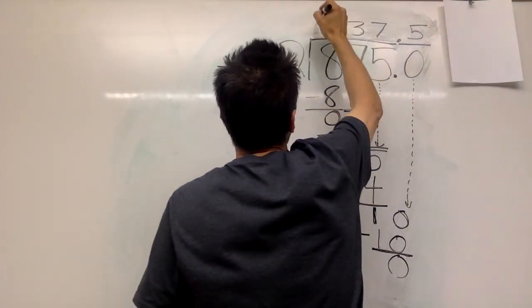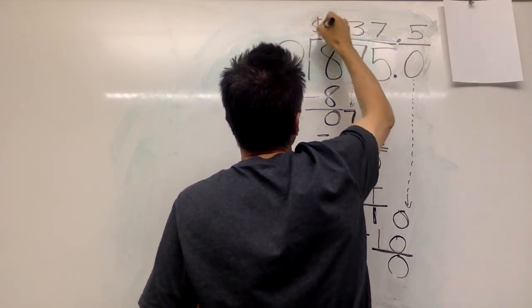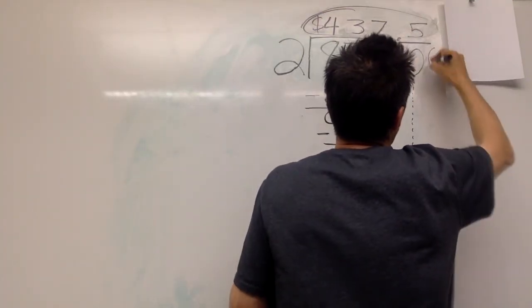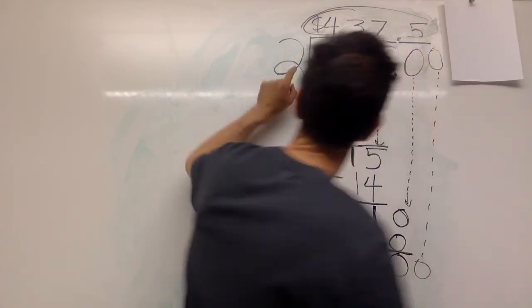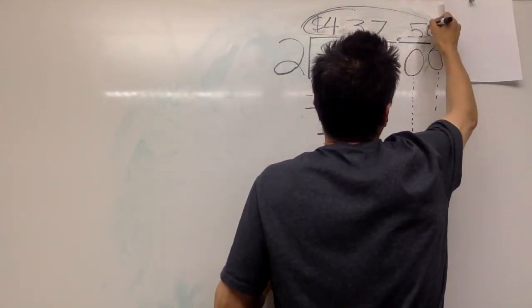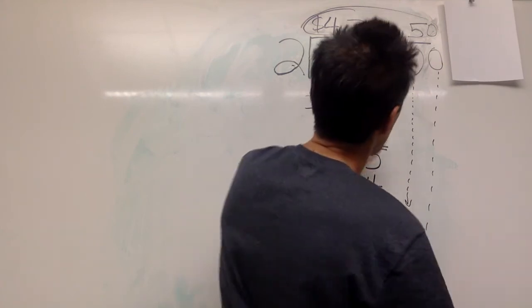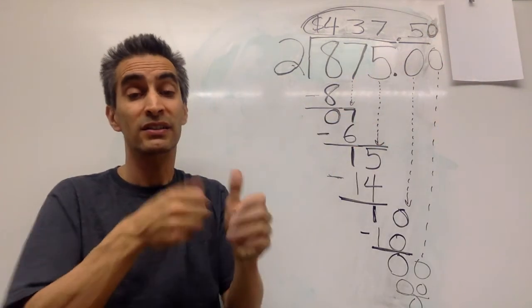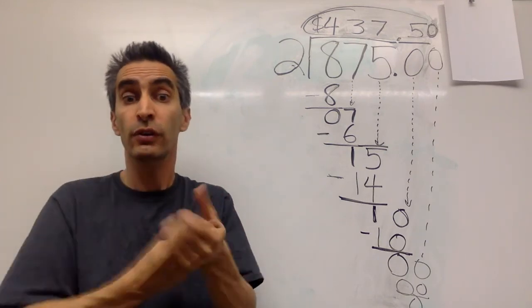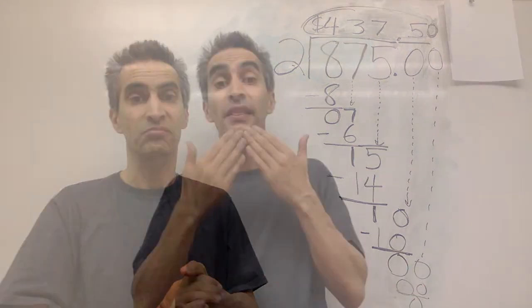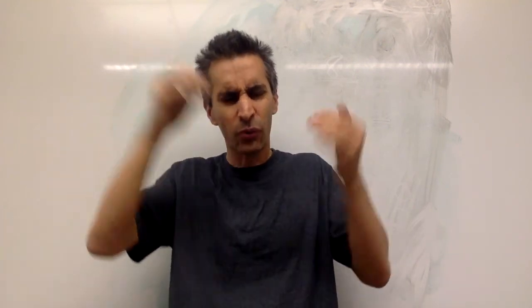And we're done. Now, if you want, you can put a zero in here — two goes into zero zero times. This means that each person, girlfriend and boyfriend, the two of you got to pay $437.50 for your European trip. Thank you for watching the video. Hope you enjoyed it. Hope you learned a little bit about division. Keep practicing your math. We'll see you later.